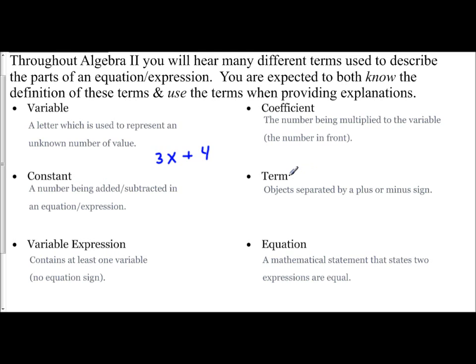Next we have a term. A term is an object that's separated by a plus or minus sign. If I take a look at this expression 3x plus 4, here's your plus sign, there are two terms. The first term is 3x, the second term is 4.